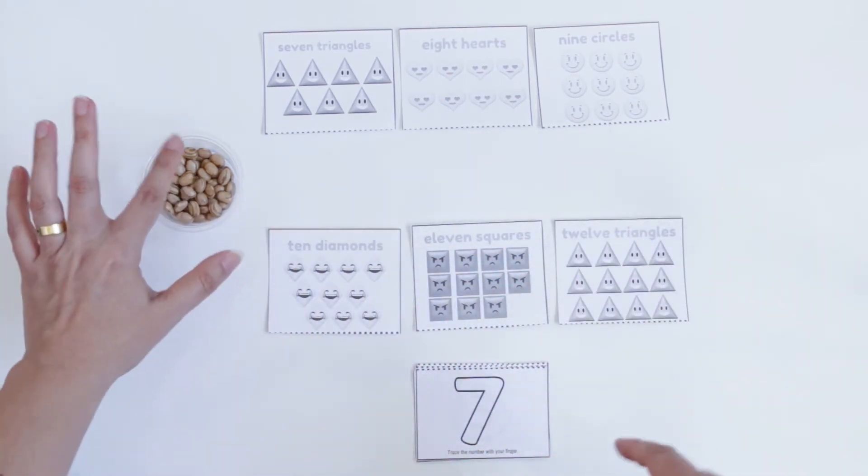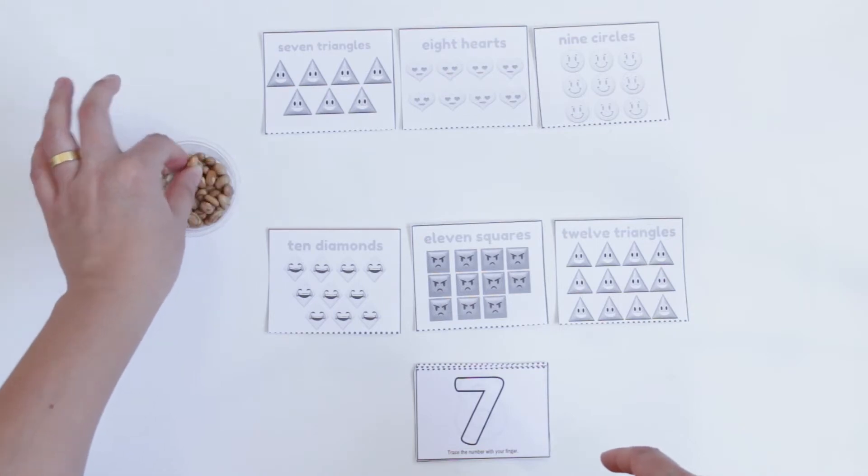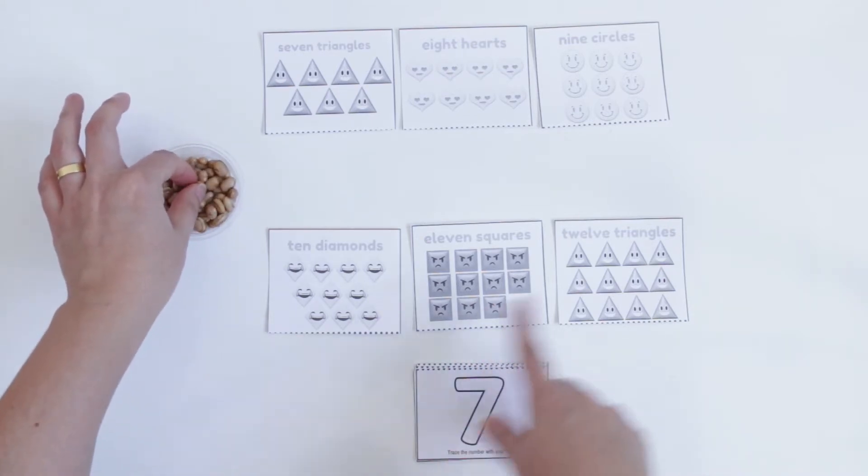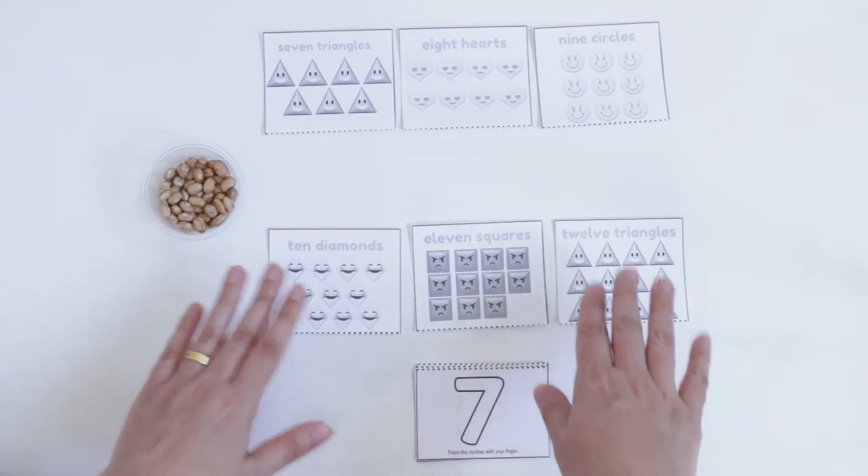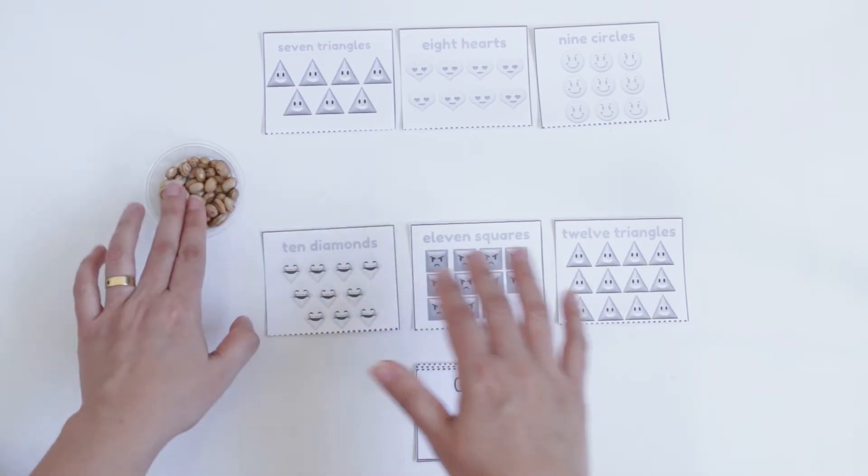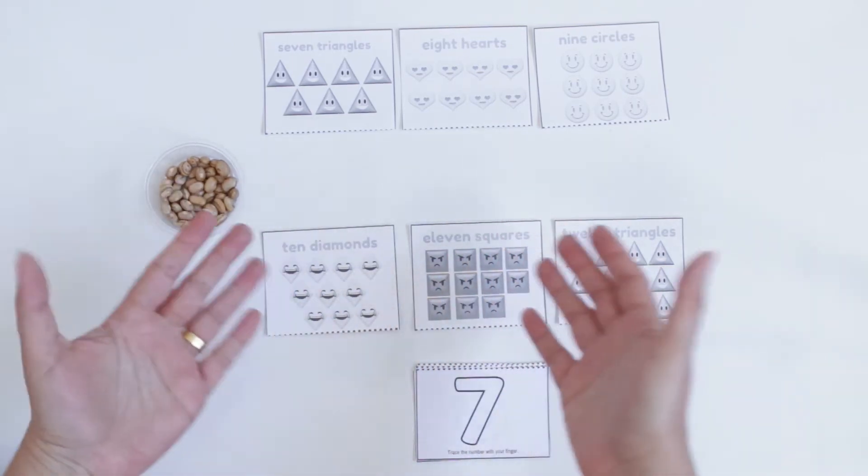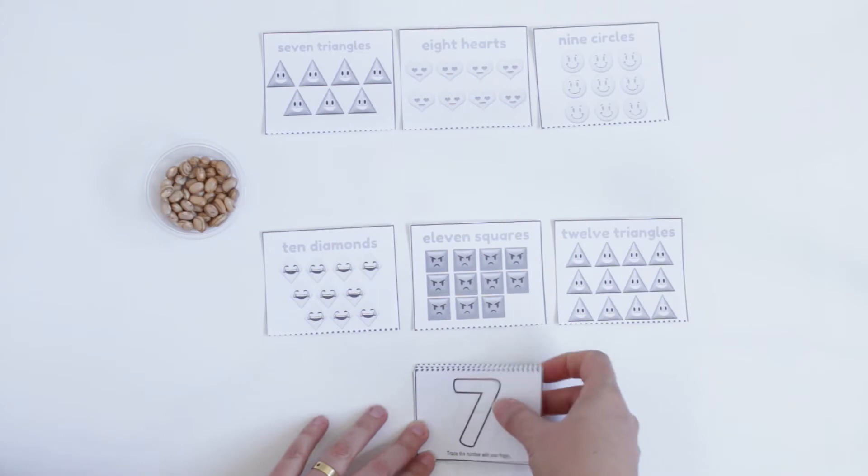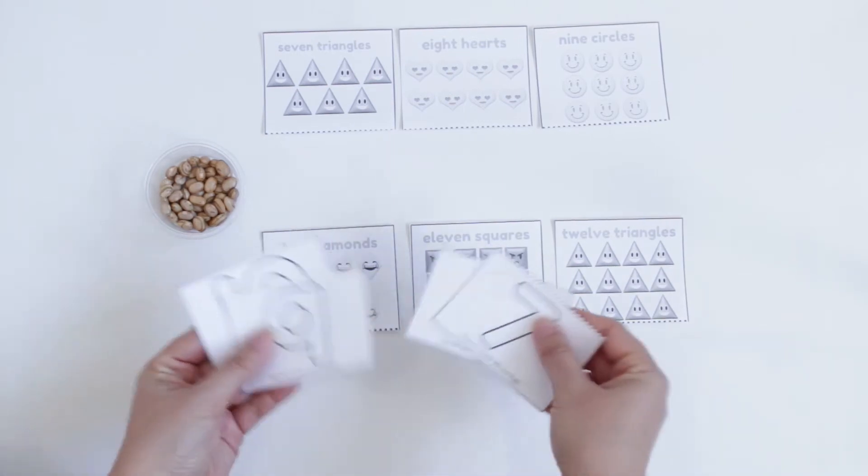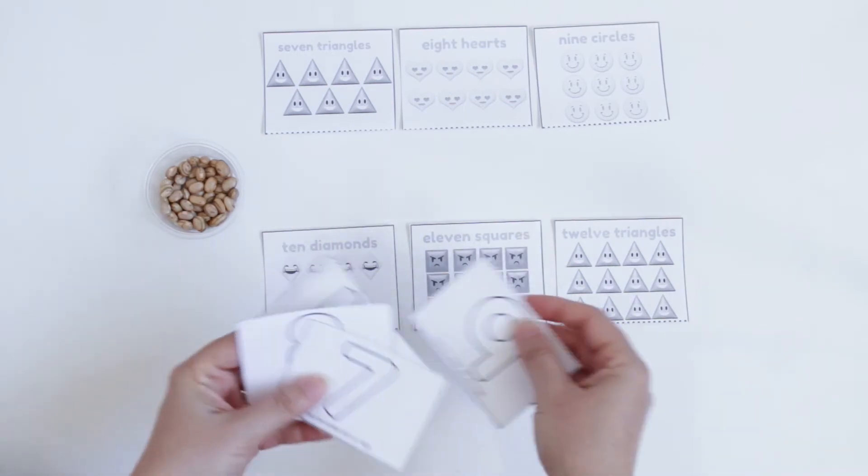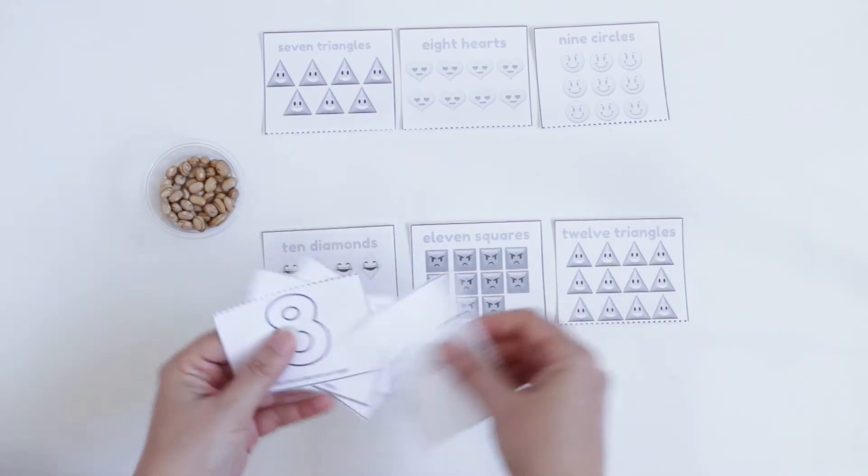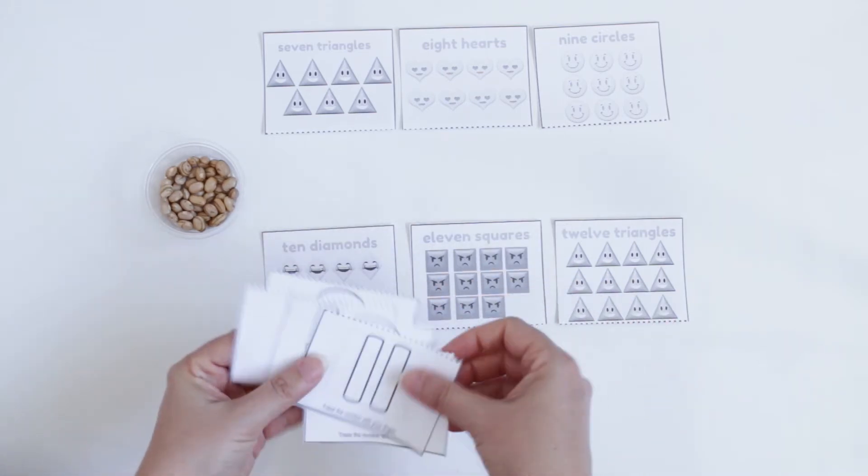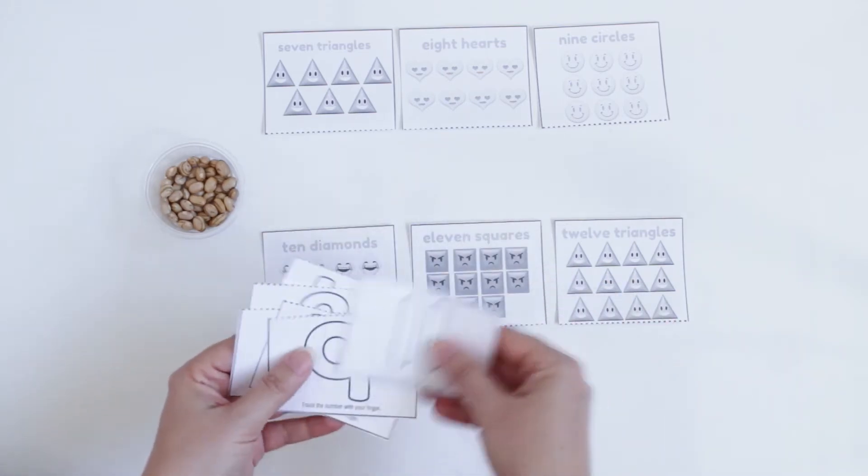And you must have the objects. Here I'm using beans in the exact same number as the kid is going to need here. This is important for them to track if they made any mistake. And for the numbers, it's in the end, and you need to shuffle them to make it a little bit of a challenge for your kid.